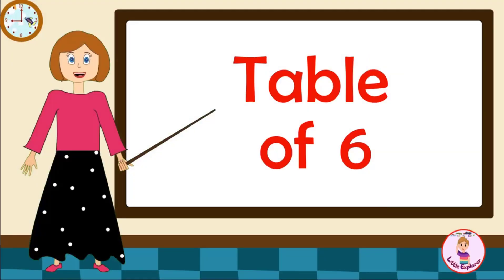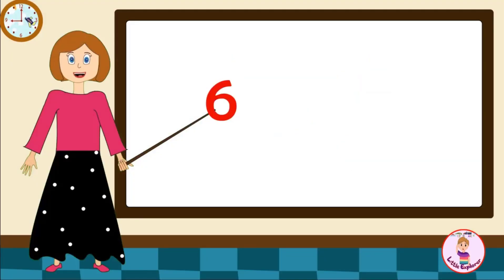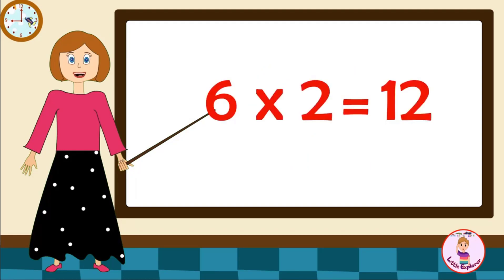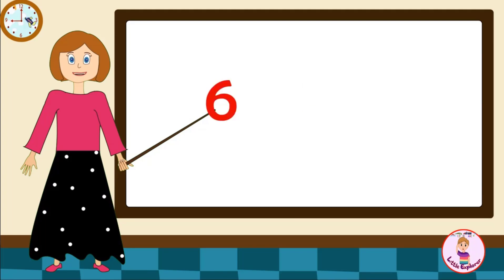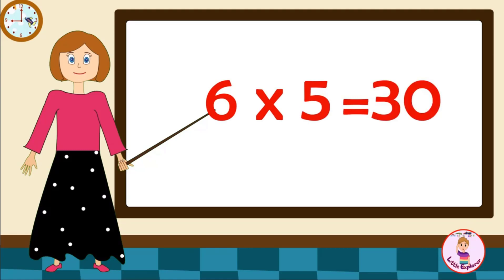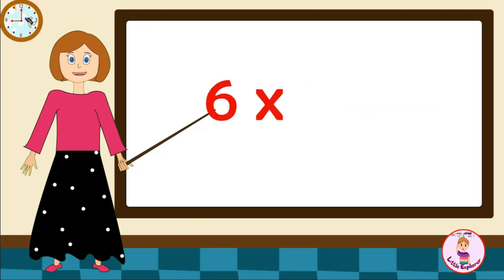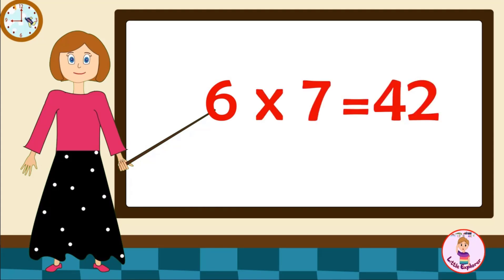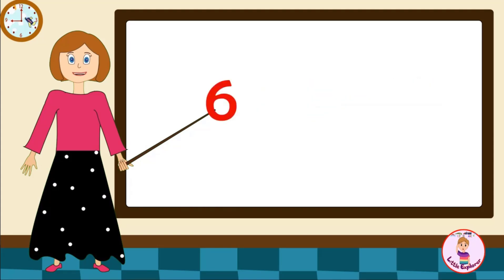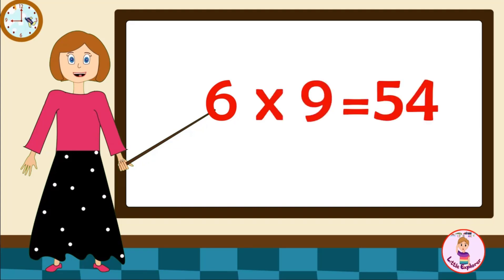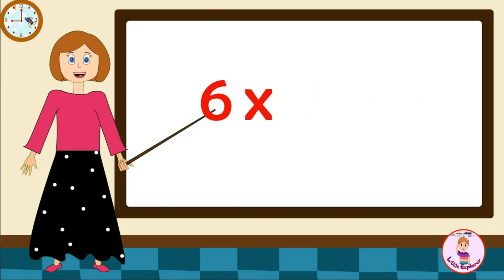Table of Six. Six-one's are six. Six-two's are twelve. Six-three's are eighteen. Six-four's are twenty-four. Six-five's are thirty. Six-six's are thirty-six. Six-seven's are forty-two. Six-eight's are forty-eight. Six-nine's are fifty-four. Six-ten's are sixty.